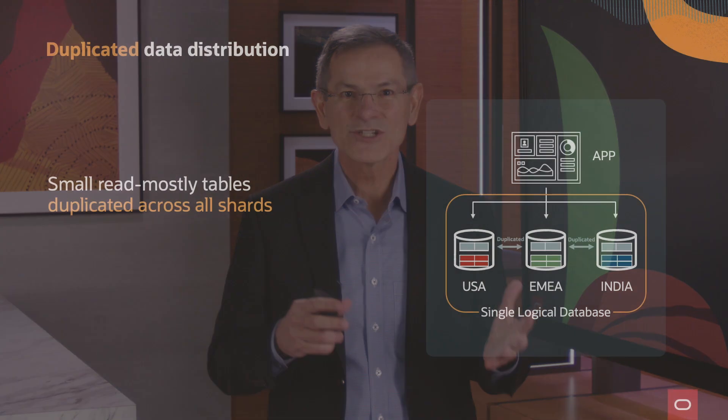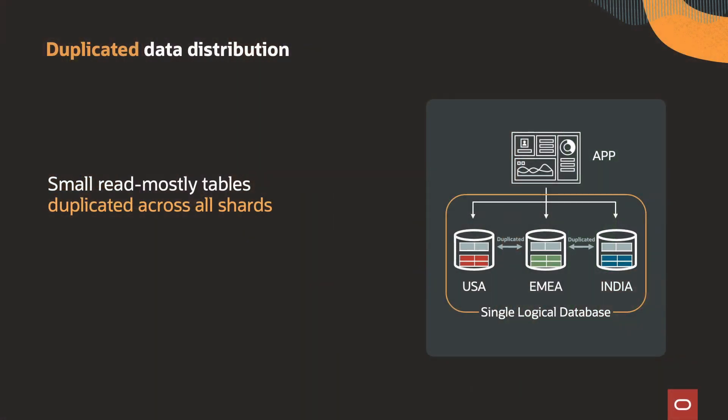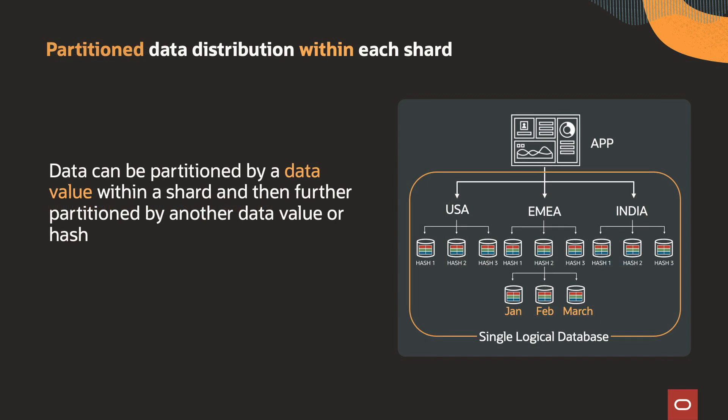Oracle also supports duplicated data distribution. In this method, smallish tables that are read mostly are duplicated across shards and kept completely consistent. This is used to avoid cross-shard queries and cross-shard referential integrity checking. Further, Oracle supports partition data distribution within each shard — for example, data in any shard can be further partitioned by data value such as date range, and then partitioned again by another value such as hash. This enables much faster queries and joins.